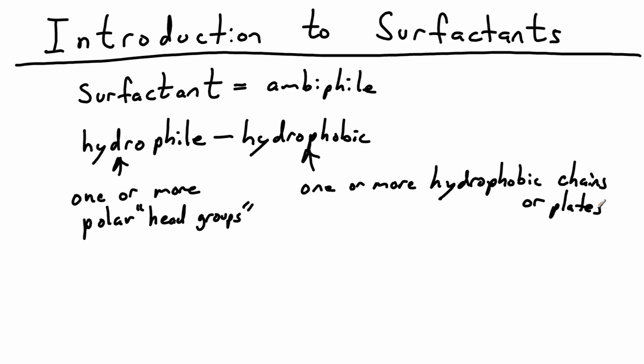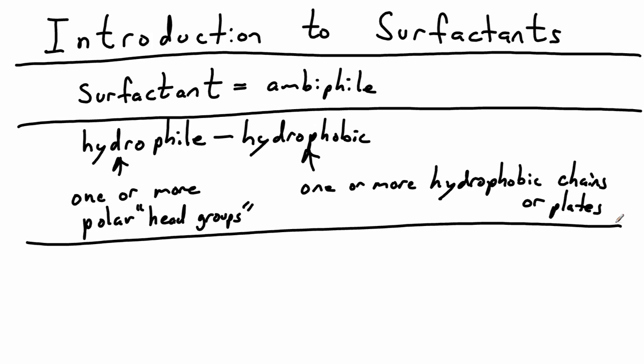We might not be dissolving our surfactant in water. We might have a solvent like hexane or something like that. So a more general definition would be a molecule that has one or more lyophile, where lyo is just the word meaning solvent, connected to one or more lyophobe.